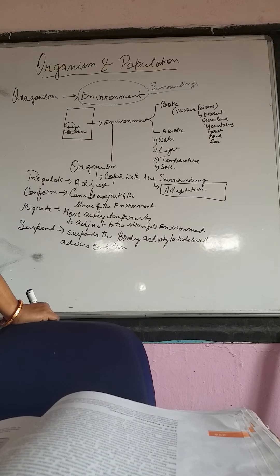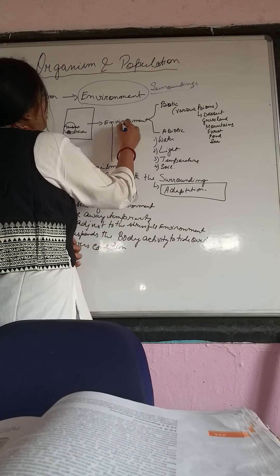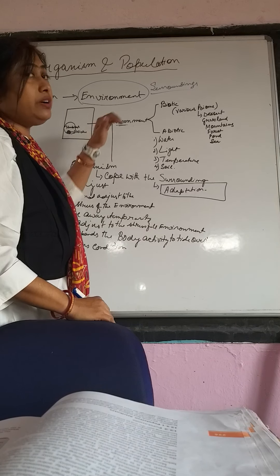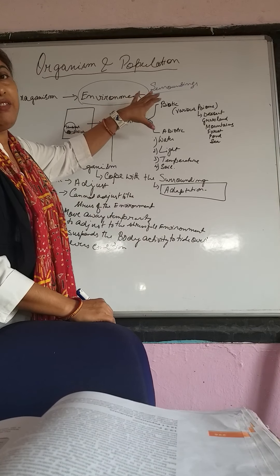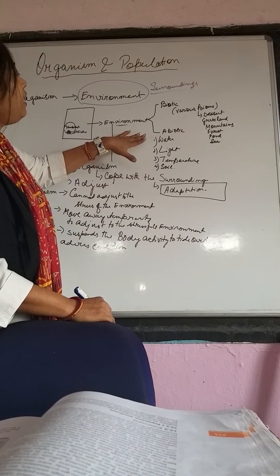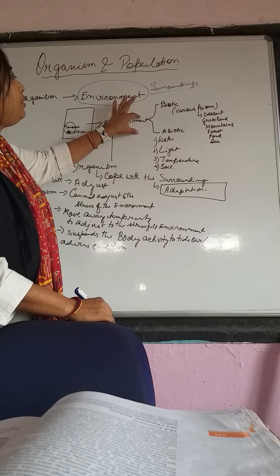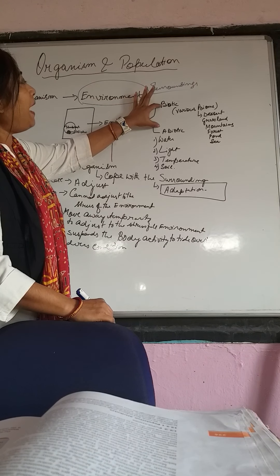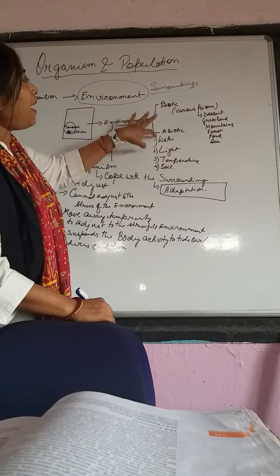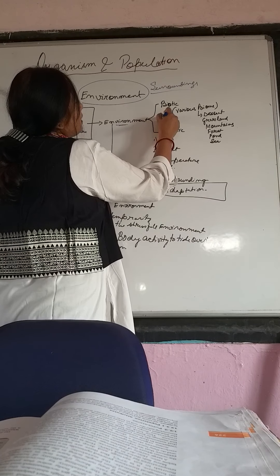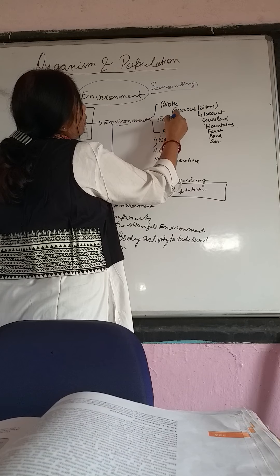If we consider the environment, we have certain factors related to it. The basic factors are the biotic factor and the abiotic factor. When the biotic factor and abiotic factor are in harmony, we call it an ecosystem.